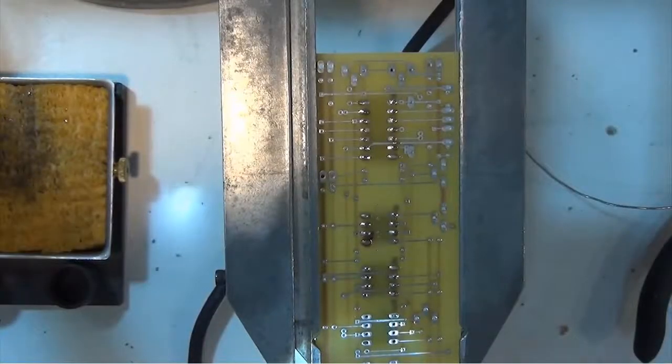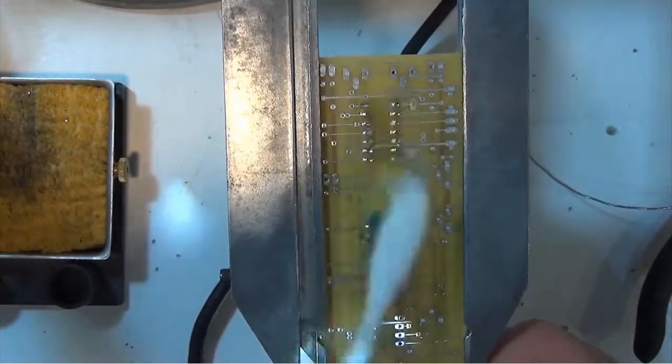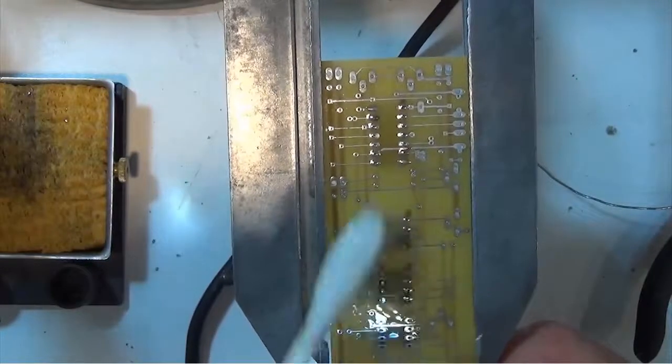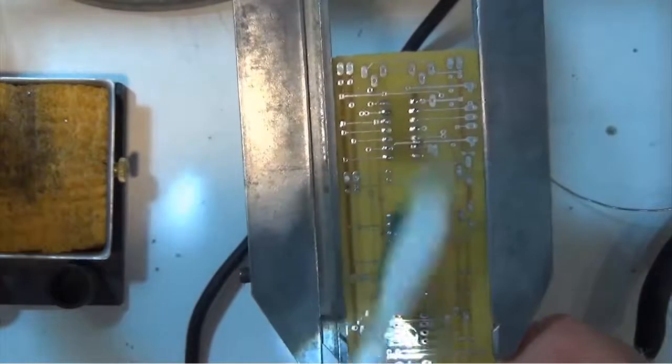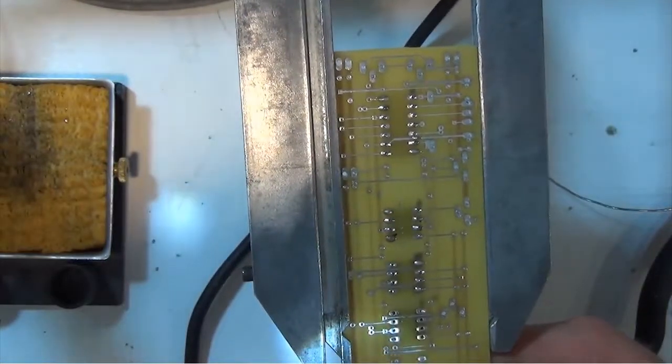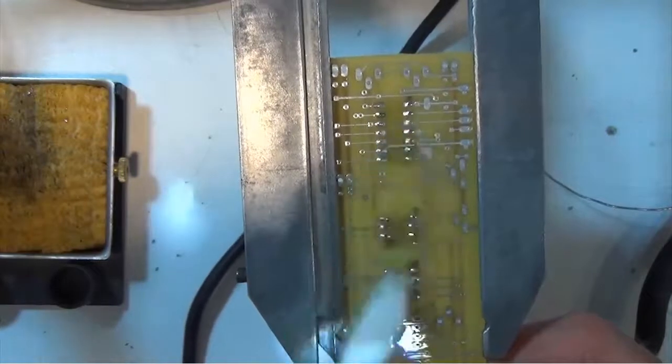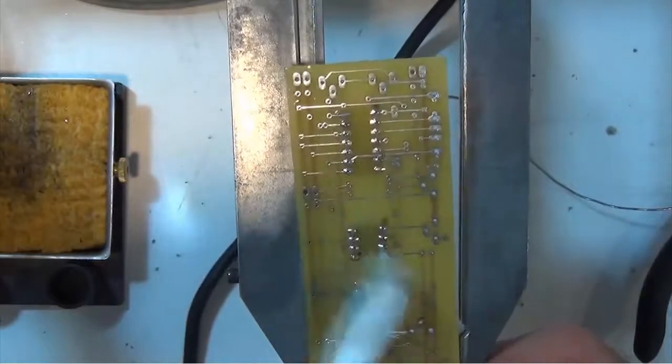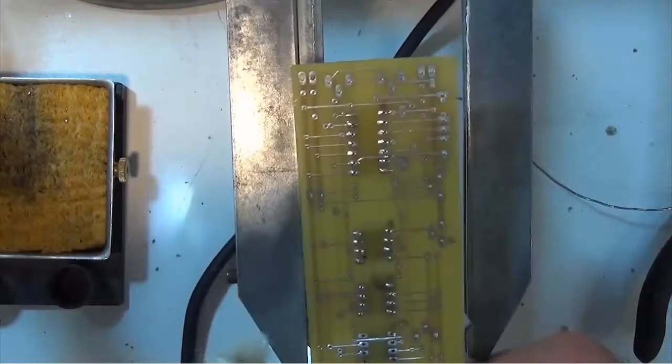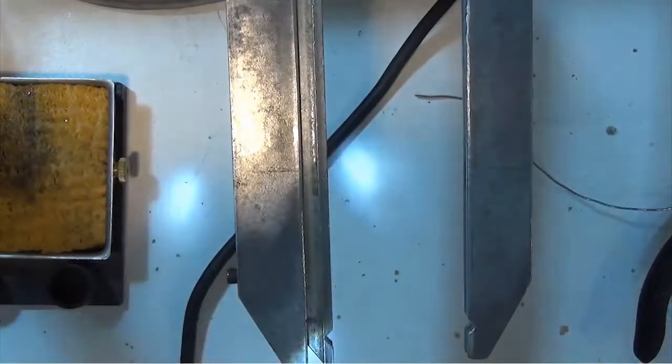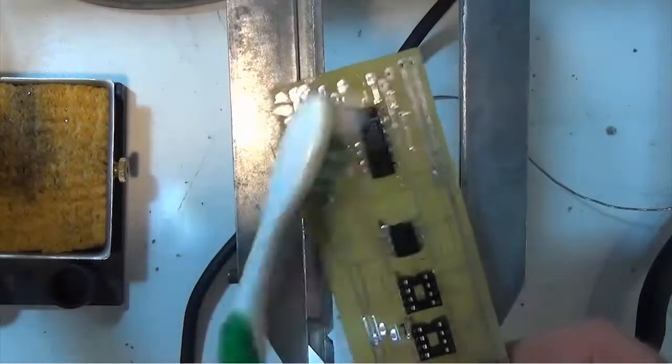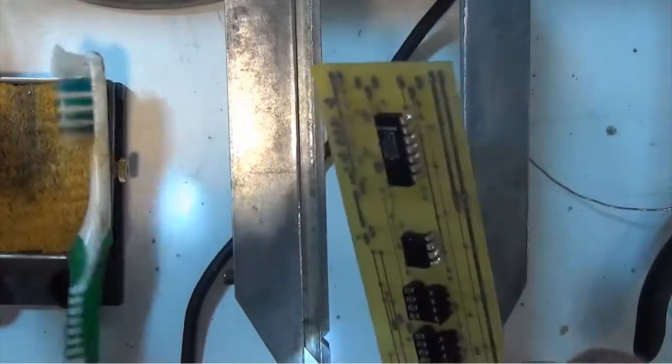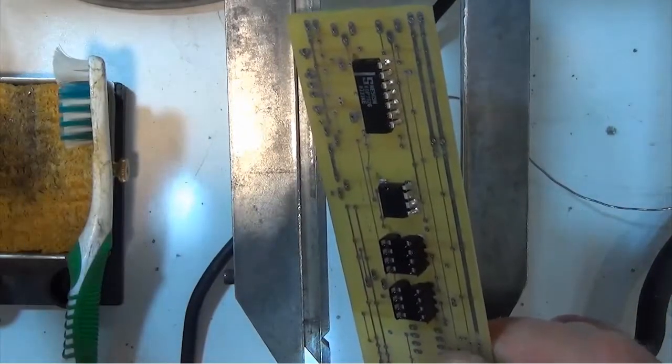Last thing that we're going to do when we're finished soldering is we clean the board with our rubbing alcohol and toothbrush. You never need to clip the leads on the IC sockets or the ICs. It's not necessary. There we go. And if you want, we can clean the other side here a little bit so we get all of the residue off. And that is the flux that comes from.